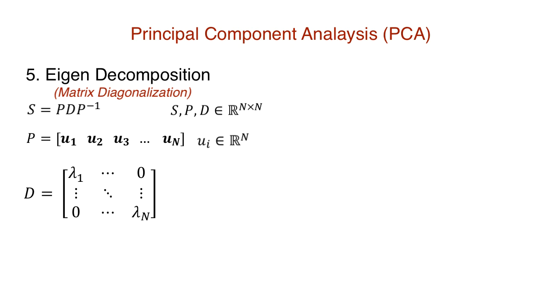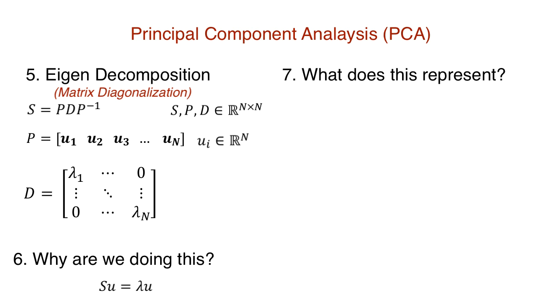So, say we want to diagonalize a matrix S. We basically want to find two matrices P and D. And hence we want to find pairs of eigenvalues and their corresponding eigenvectors. If S is an n cross n square matrix, we have n such pairs. But why are we doing this? Why do we want pairs of eigenvalues and eigenvectors?